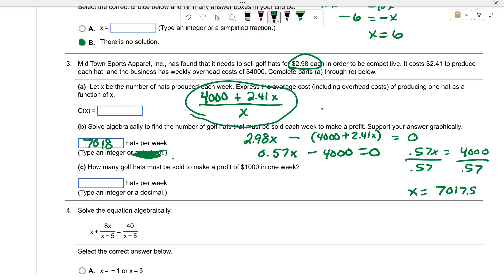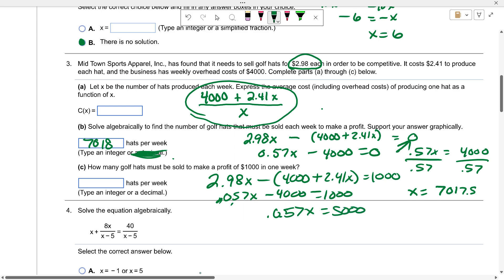How many hats must be sold to make a profit of $1000? This was break-even at 7018, so to make $1000 you do the same thing: $2.98x minus $4000 plus $2.41x equals $1000. So 0.57x minus $4000 equals $1000. If we move the $4000, 0.57x equals $5000 divided by 0.57.